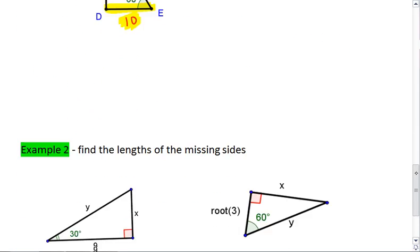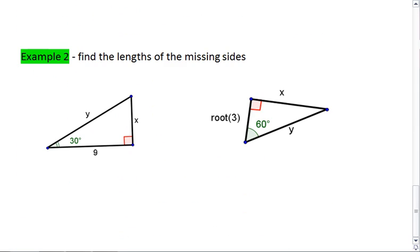Let's look at an example. Given these two triangles, and here root 3 simply means square root of 3, I want you to find the missing lengths. Take a moment, work this out on your own first. Pause the video, and resume when you're ready to see the solutions.